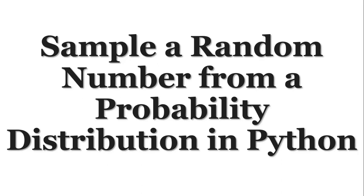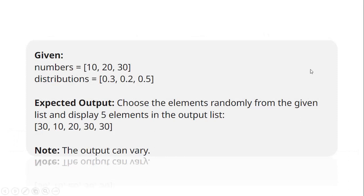To understand this question, let us look at this example where we have been given a couple of lists: numbers and distributions. Numbers consists of three numbers — 10, 20, and 30 — and their relative weights are 0.3, 0.2, and 0.5. These values are nothing but the probability of occurrence of each number in the given list in the output list.